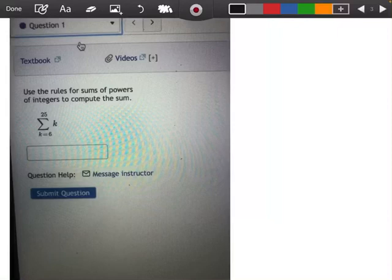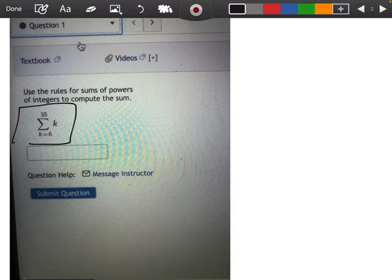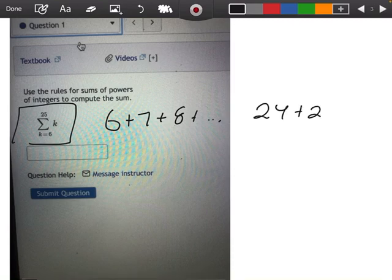This is a problem out of 5.1, it's actually the first problem, and it says use the rules for the sums of powers of integers to compute the sum. So we're trying to find the sum starting at 6 all the way to 25. So to get a visual of what's happening here, I'm going to take 6 plus 7 plus 8, going all the way until I get to 25.